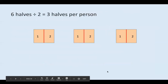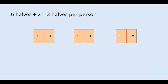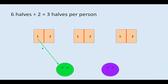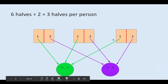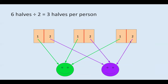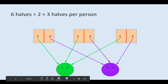So six halves divided by two equals three halves per person. Let's look at this picture: we've got one, two, three, four, five, six halves of crackers — three whole crackers cut into six halves. Person one gets a half from each cracker, and person two gets a half from each cracker. Person one has three arrows going to him and person two has three arrows going to her, so each person gets three halves of a cracker. You can see that six halves divided by two equals three halves gives us the same result as three divided by two equals one and a half, because two halves of a cracker equal one whole cracker plus one more half.